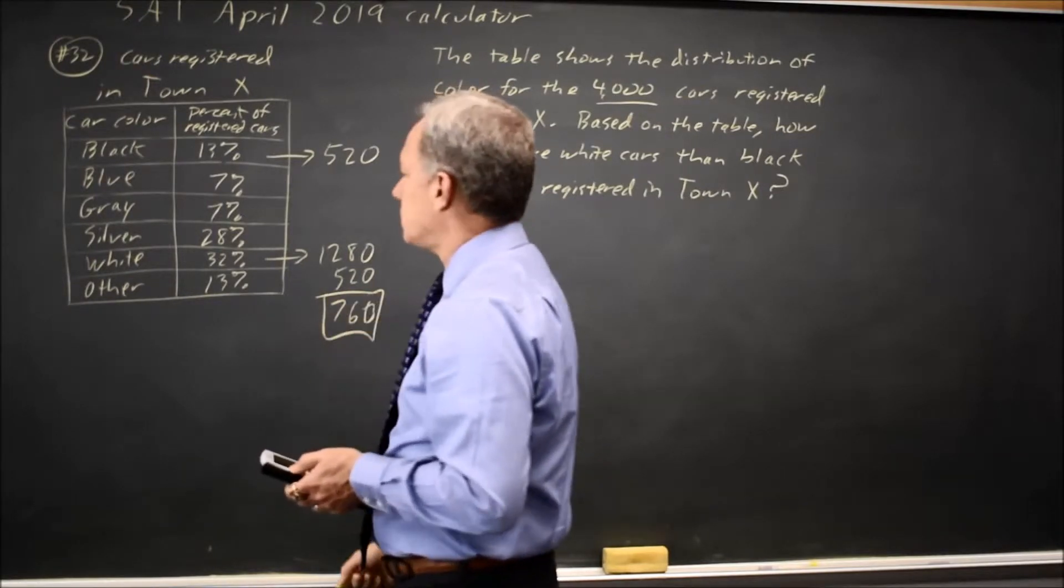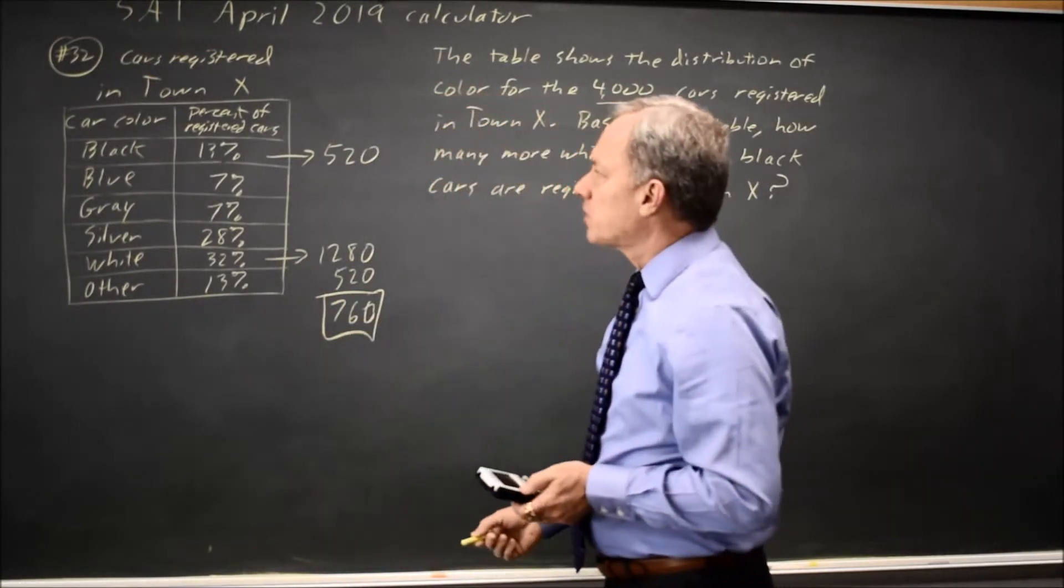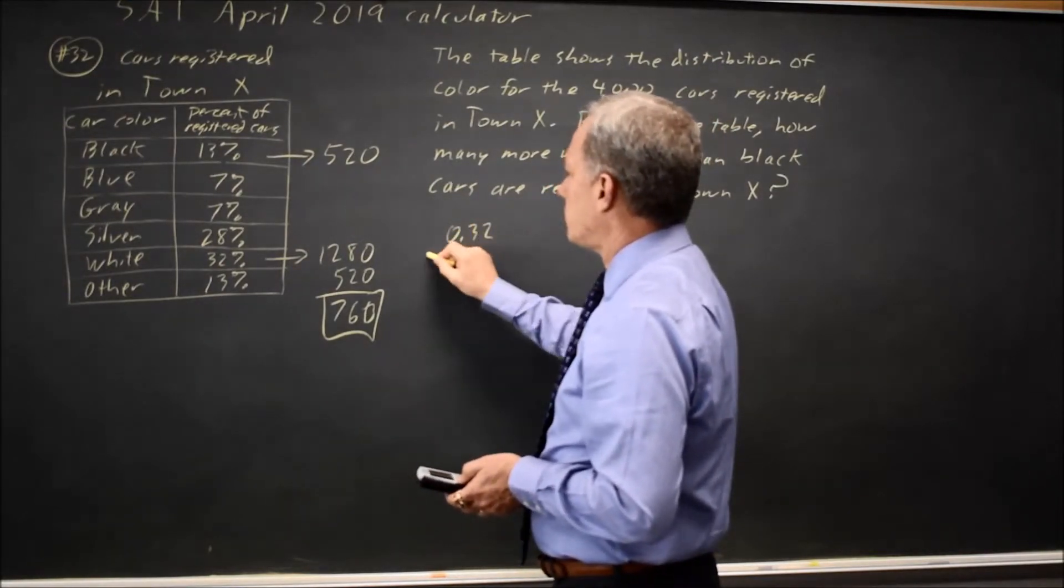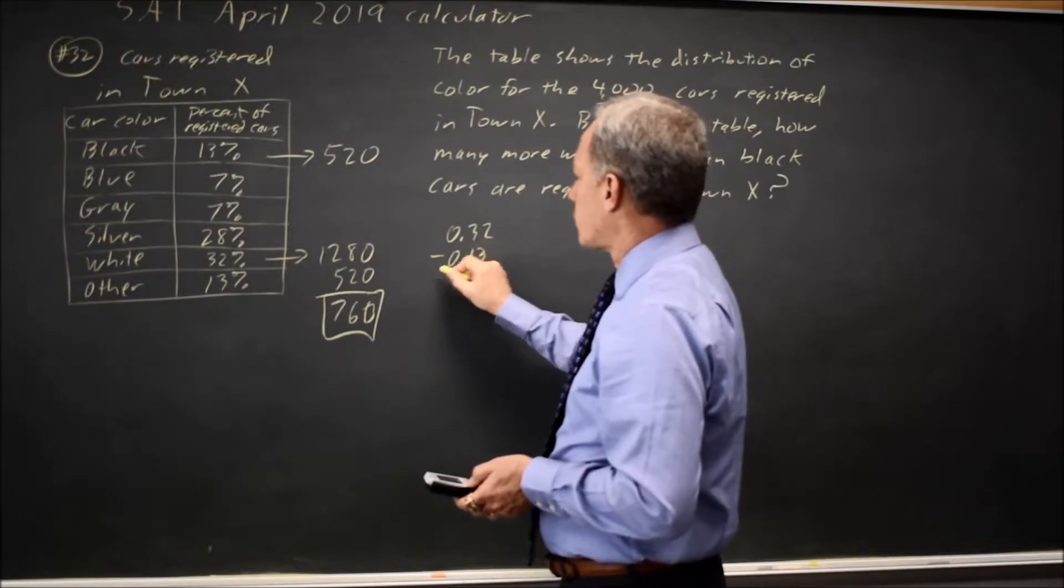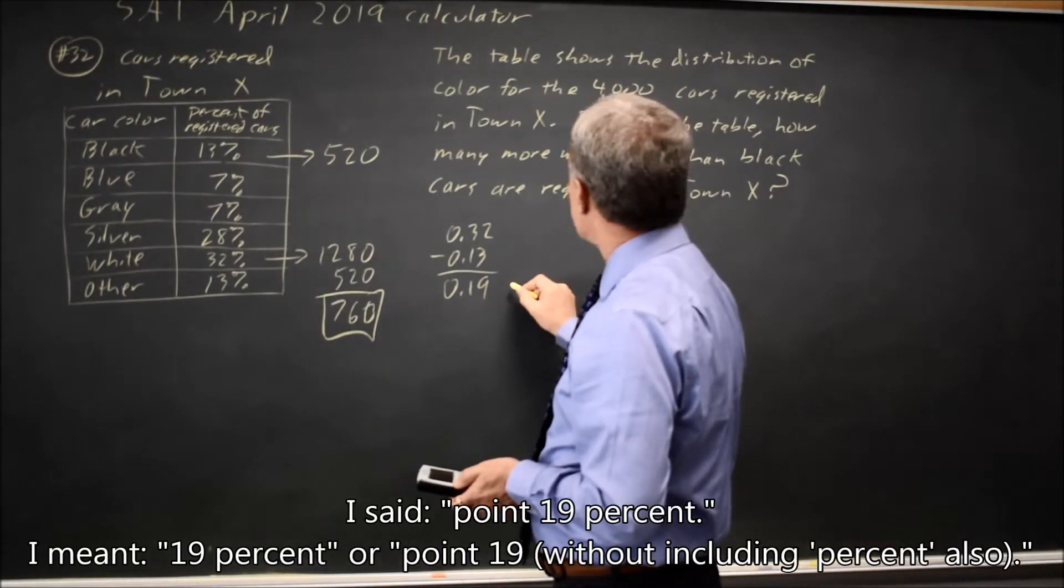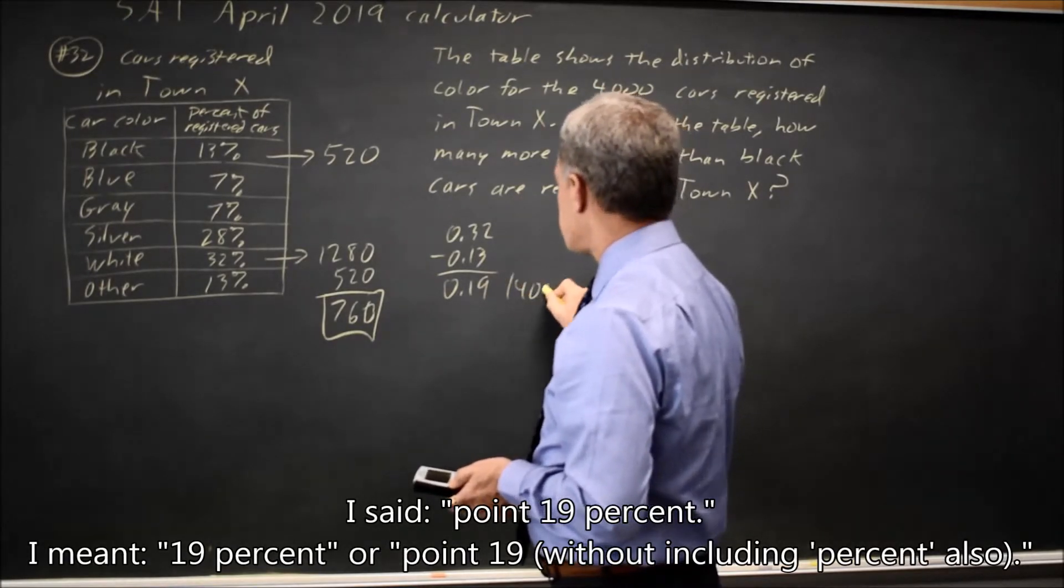And that would be the answer. Alternatively, we could find the difference in the percents. So that would be 0.32 minus 0.13 is 0.19 and multiply that number times 4,000.